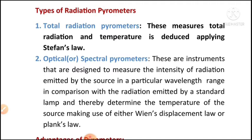The second type of radiation pyrometer is optical or spectral pyrometers. These are instruments designed to measure the intensity of radiation emitted by the source in a particular wavelength range, in comparison with the radiation emitted by a standard lamp.